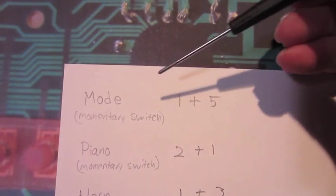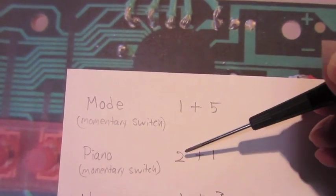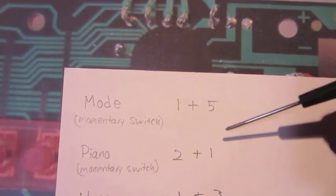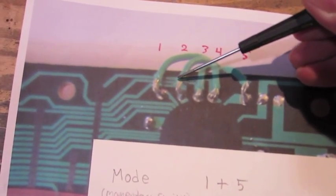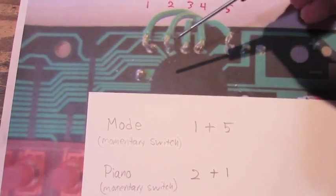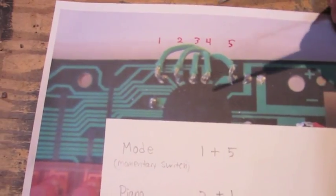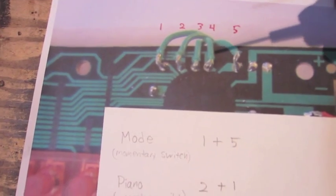The next is the piano. It's also a momentary switch. This is pins 2 and 1. You just press it once, it goes to piano. Press it again, it stays at the piano.